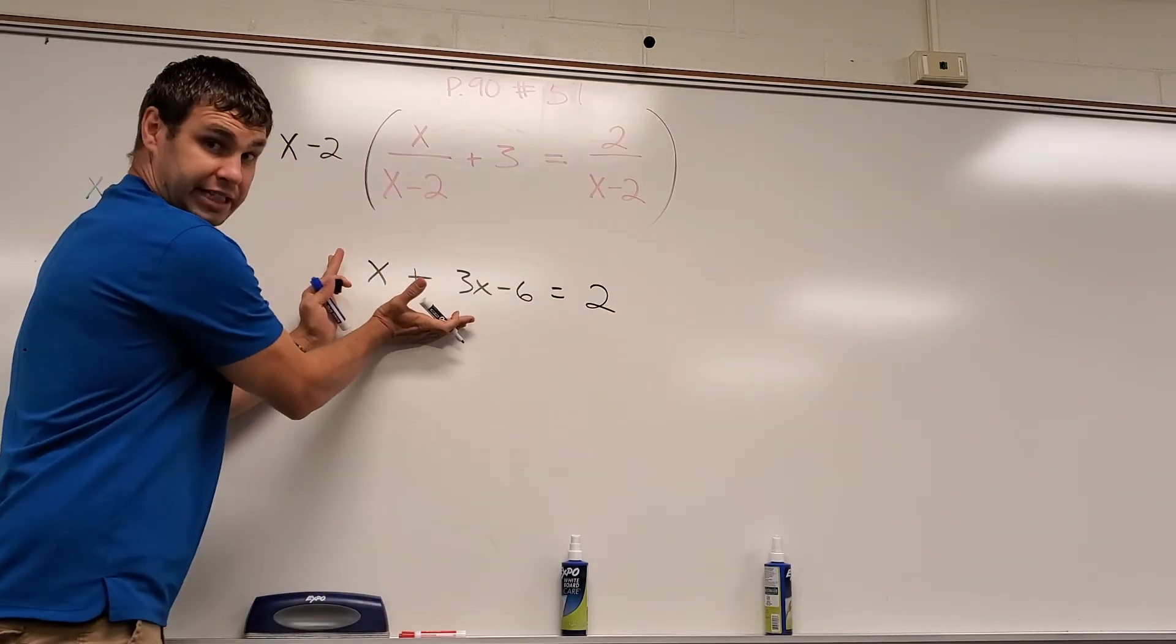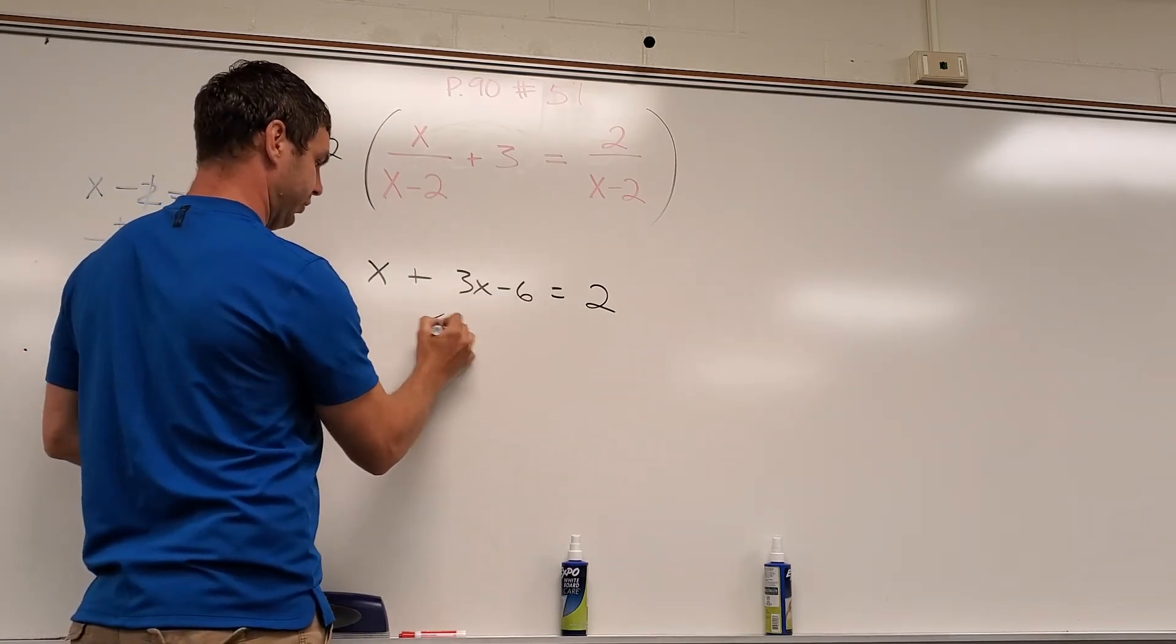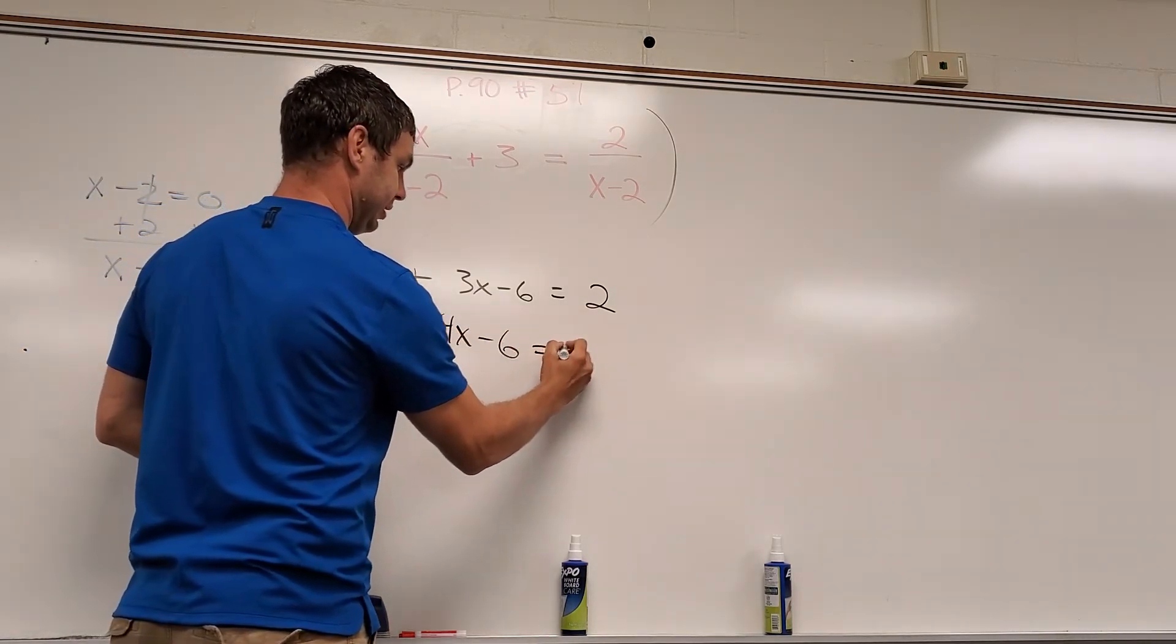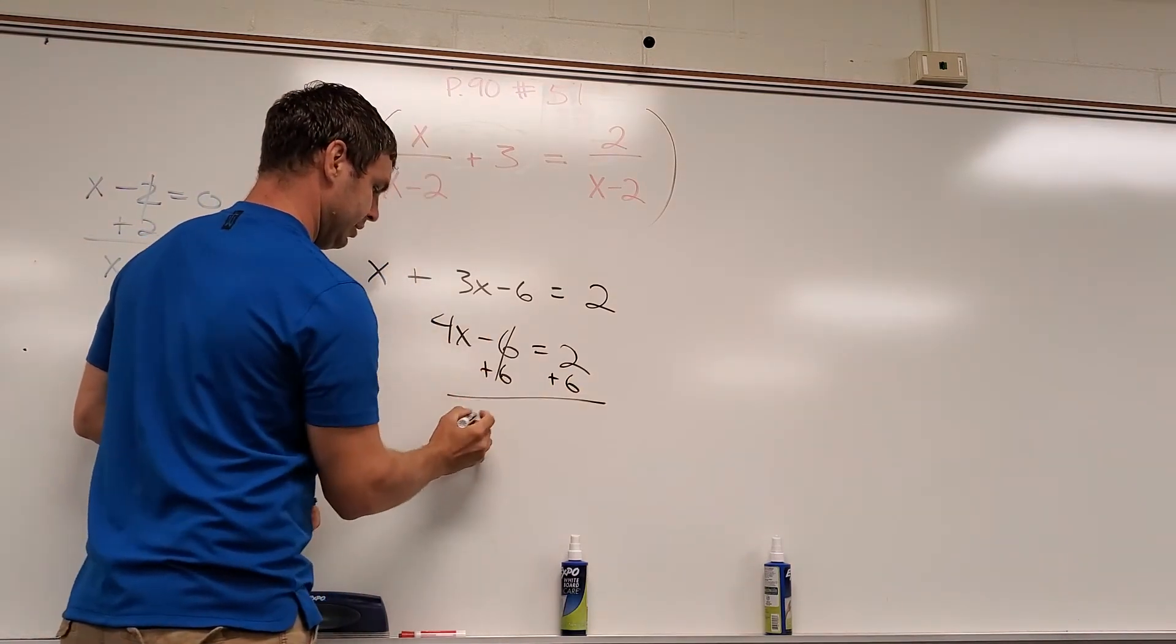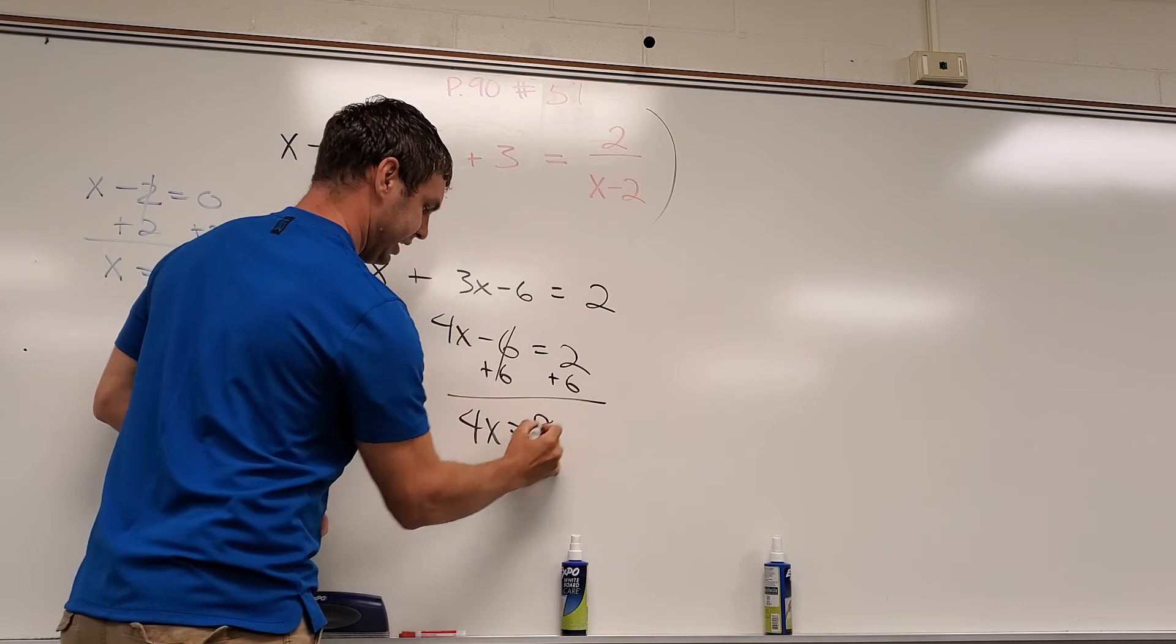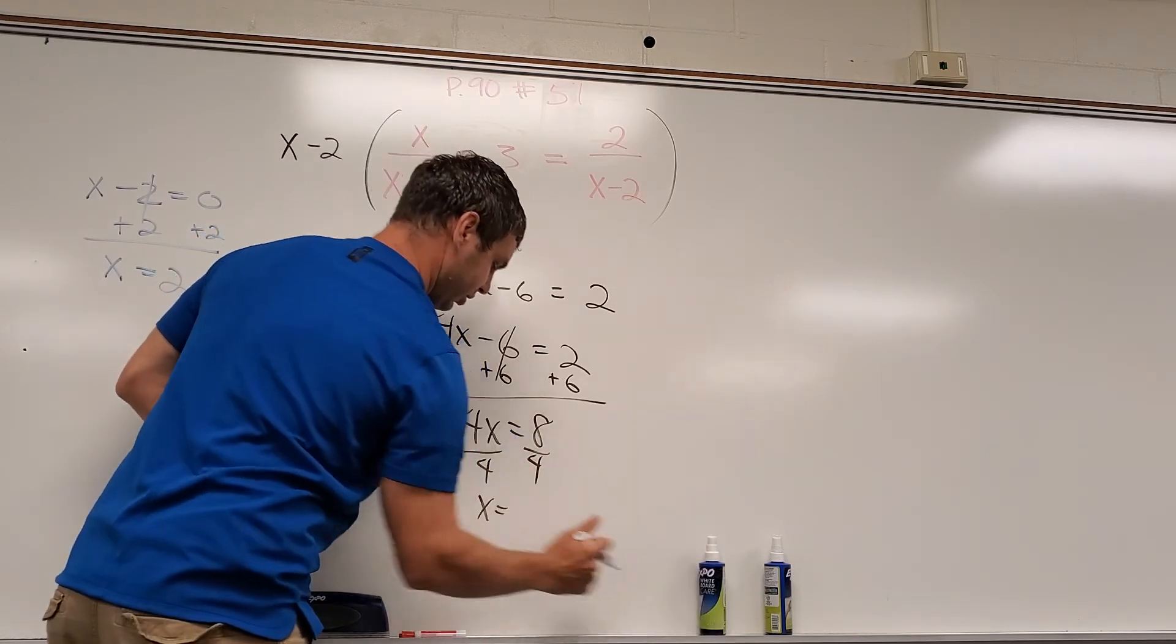So now it looks a lot easier to solve, and it is. So x plus 3x is going to be 4x minus 6 equals 2. Add 6 to both sides, and now 4x equals 8. And when I divide by 4, I'm left with x equals 2.